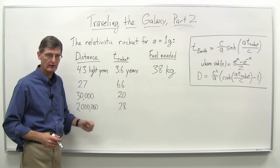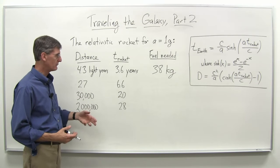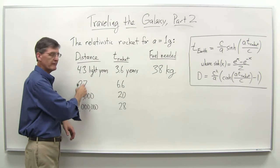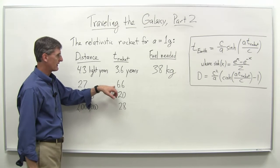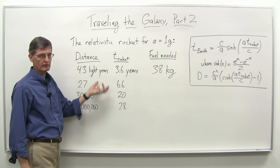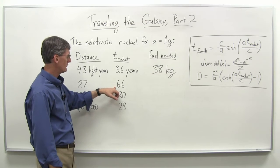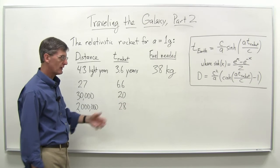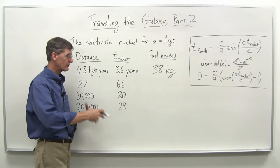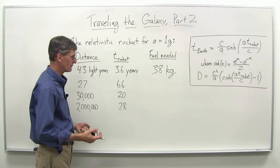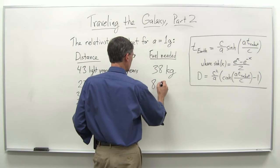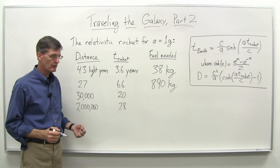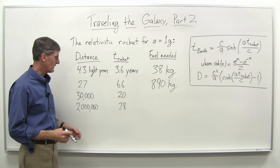Of course, a lot of technical hurdles to overcome, but in principle it's possible. What about if we wanted to go 27 light years to the Vega star system, a major star system not too far away? We can get there in 6.6 years. Not too bad. How much fuel do we need then? Remember we're slowing down as we get there, so that's going to add to our fuel consumption. It turns out it's about 890 kilograms. So a fairly big jump there, but again, we can imagine that.